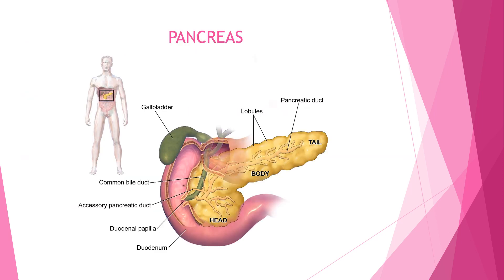This is the pancreas diagram. The gallbladder enters the small intestine and releases bile. The pancreas releases pancreatic secretion. This part is the ampulla of Vater, and this is the small intestine.